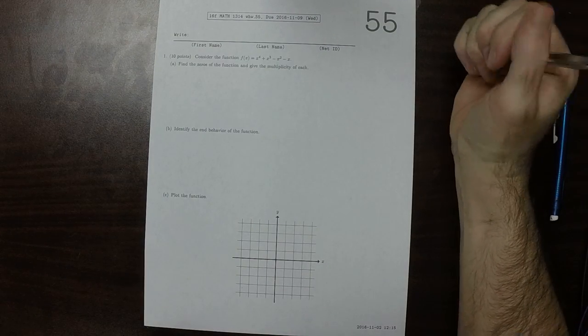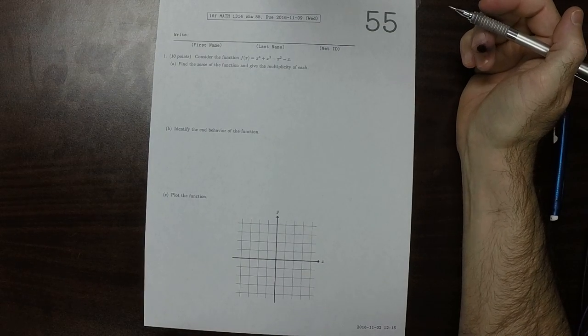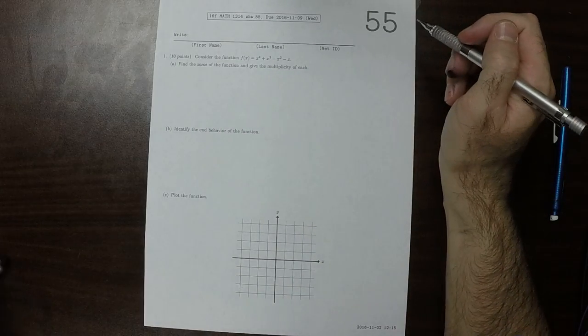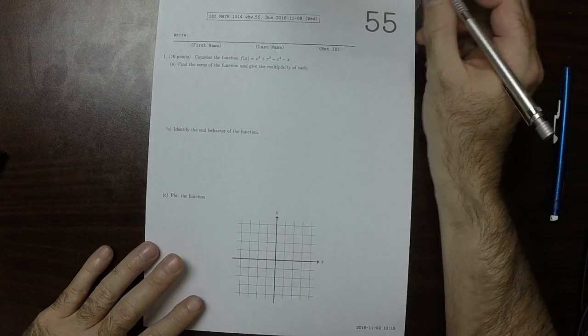This is the solution to written homework 55. So it says find the zeros of the function, and the only way we have to do that is to factor.